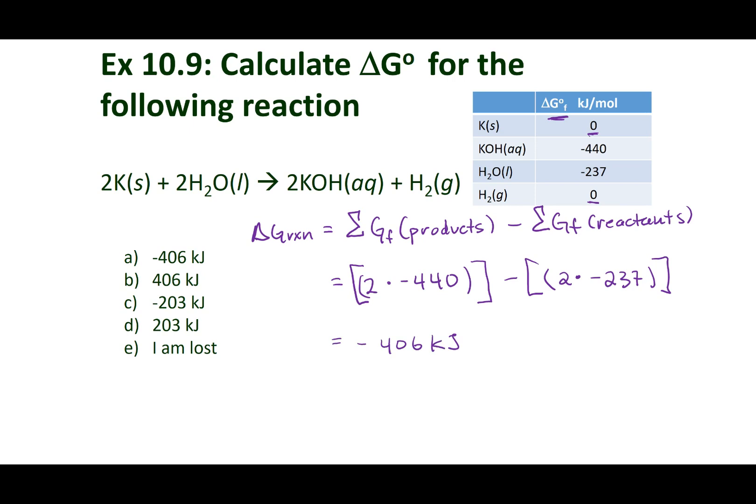So if I run this calculation out, I get negative 406 kilojoules. Now, you guys can see this is a negative number. So this reaction is spontaneous. If you guys looked at this reaction, what it is is throwing potassium metal into liquid water. And this is a very explosive reaction. And unlike our last reaction, it occurs very fast.